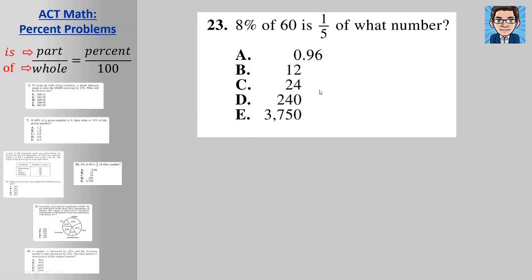Okay, 8 percent of 60 is one-fifth of what number? Again, a two-part thing. So let's first figure out the first part. What is 8 percent of 60? So 8 percent is 0.08 times 60. Multiply those two out and we get 4.8. So then this just becomes 4.8.